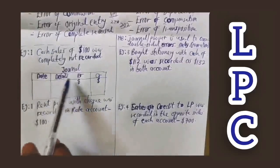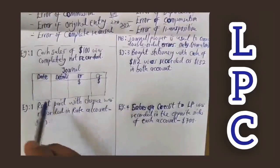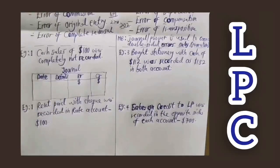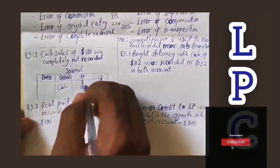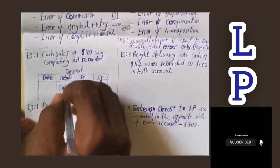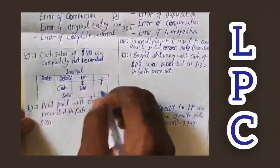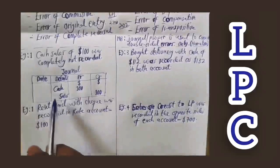Here is my journal with date, details, debit, and credit columns. Cash sales of $100 were completely not recorded, so we record it again. Cash is coming in, so cash is debited with $100. Sales is going out, so sales is credited with $100 to comply with the double entry principle.